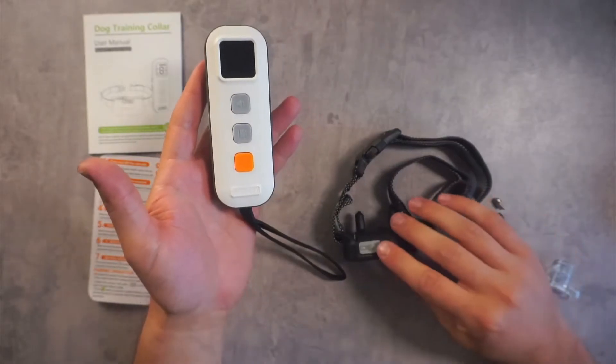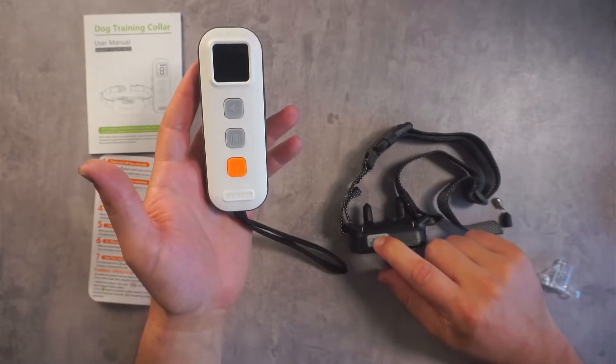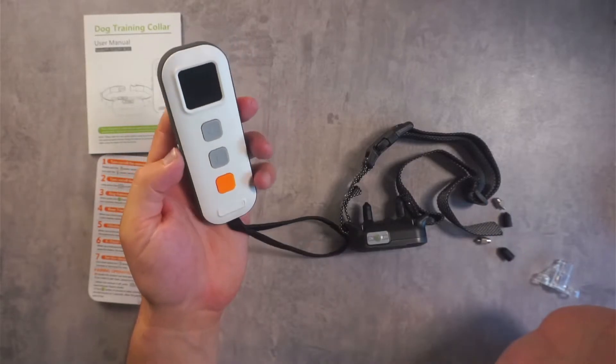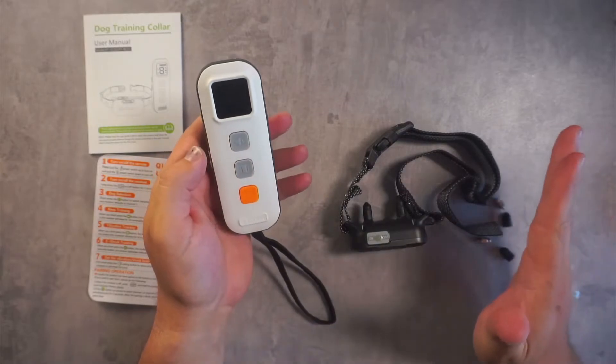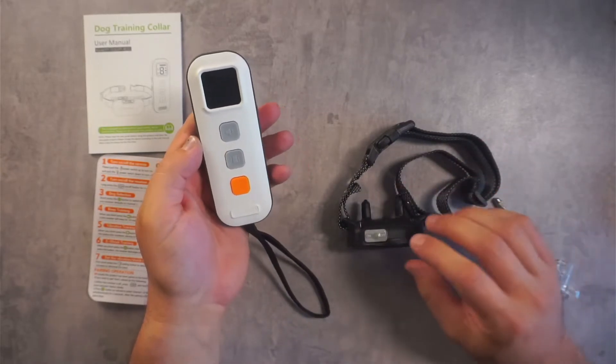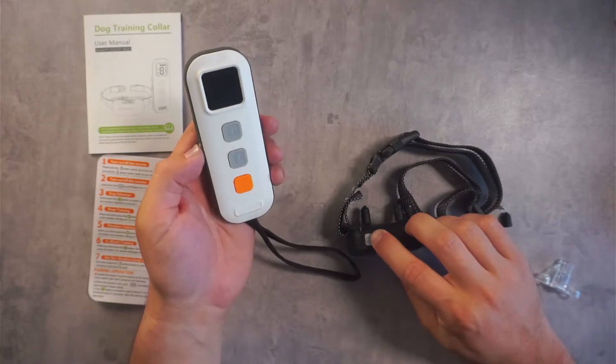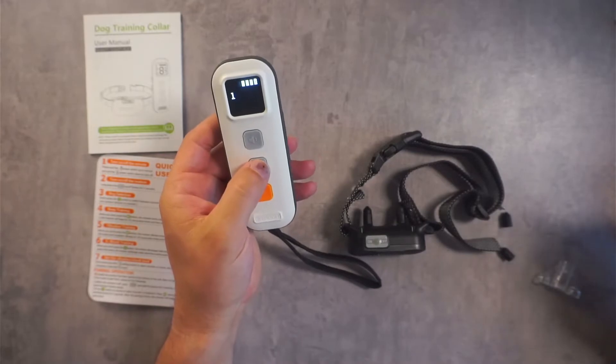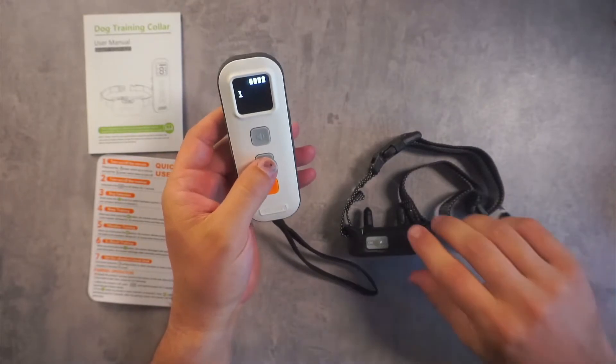So now I'm going to show you how to pair this remote to the collar. So you hold the on-off button until it beeps and vibrates, remove your hand, and then you will turn the remote on. And then it will automatically pair to the collar. So I'll show you that now. Perfect. As you can see, it paired.